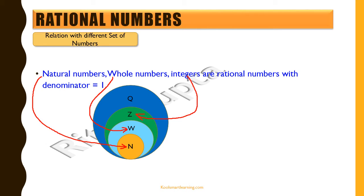The biggest circle, the dark blue color represented by Q, represents the rational numbers. As just explained, natural numbers, whole numbers, and integers — if all of them are taken as quotients of integers with the denominator being one — we can say that all of them are actually nothing but rational numbers.